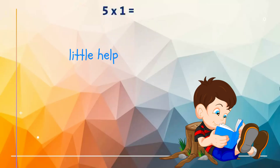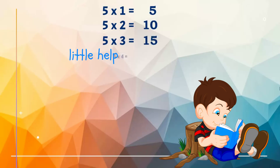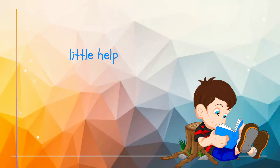Five ones are five. Five twos are ten. Five threes are fifteen. Five fours are twenty. Five fives are twenty-five. Five sixes are thirty.